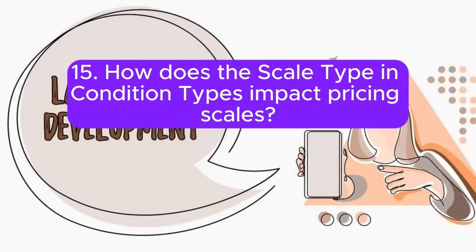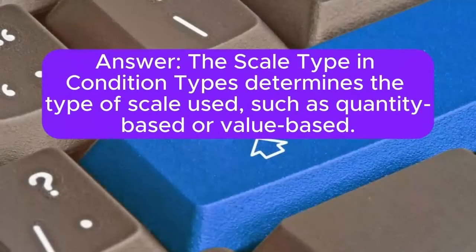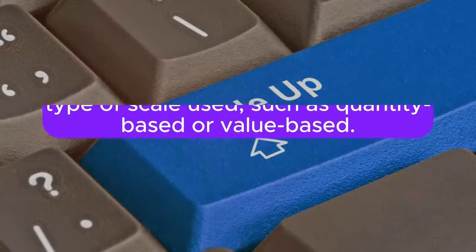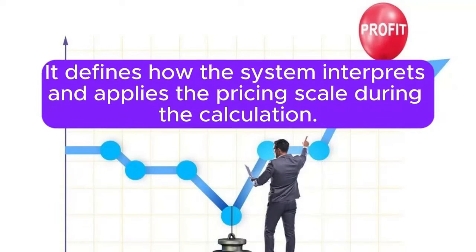Question 15: How does the scale type in condition types impact pricing scales? Answer: The scale type in condition types determines the type of scale used, such as quantity-based or value-based. It defines how the system interprets and applies the pricing scale during the calculation.